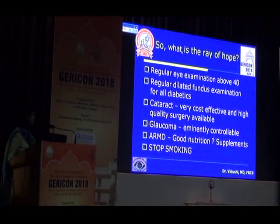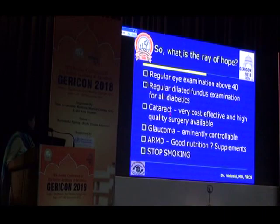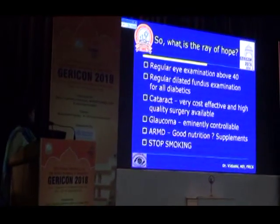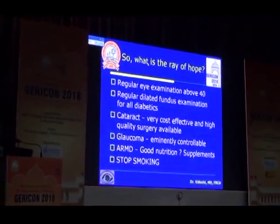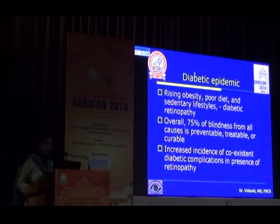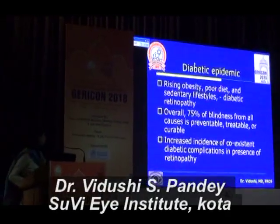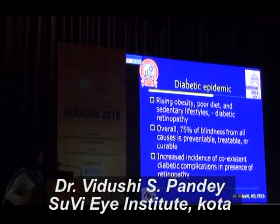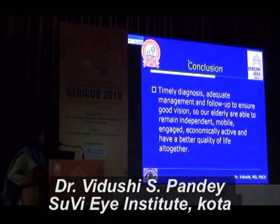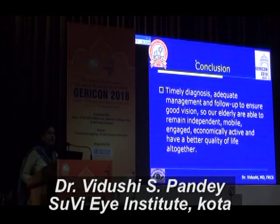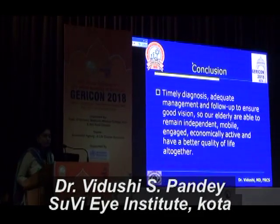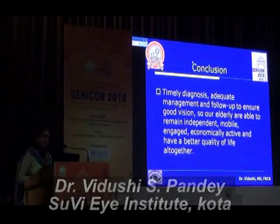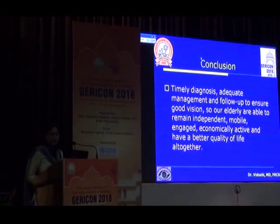So what is the real hope in all these geriatric cases? Regular eye examination and regular dilated fundus examination. Cataract has very cost-effective and high-quality surgery. Glaucoma is controllable. For ARMD, good nutrition and supplements help. Smoking plays a large role in many of these eye diseases, so it must be controlled. In diabetics, rising obesity and poor diet should be controlled. Overall, 75% of blindness is either preventable, treatable, or curable — so it is not a very grim situation. To conclude: timely diagnosis, adequate management, and follow-up to ensure good vision for the elderly, so that they are able to remain independent, mobile, engaged, economically active, and have a better quality of life. Thank you.